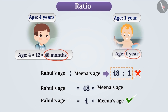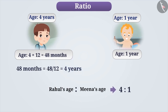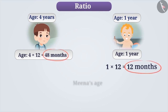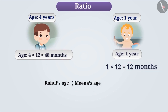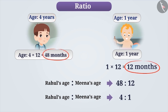Otherwise, it will result in an incorrect ratio. To convert the quantities into the same units, we can divide 48 months by 12 and convert it into years. Here, 48 months is equal to 4 years. Thus, we can write the ratio of ages as 4 is to 1. Similarly, we can also get the ratio of their ages by converting the units into months. If we keep Rahul's age in months and express Meena's age too in months, we get both ages in the same unit. Since the units are the same, we can find the ratio of Rahul's age to Meena's age as 48 is to 12. When units are in years the ratio is 4 is to 1, and when units are in months the ratio is 48 is to 12. Are both these ratios equal?